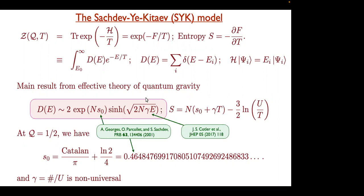These are all self-averaging. Of course when you do the calculation you do average, but then you can check that the fluctuations about the average are not important. That's the beauty of having random numbers: it actually simplifies the problem because you can average, and sometimes the averaging is a very innocuous thing.